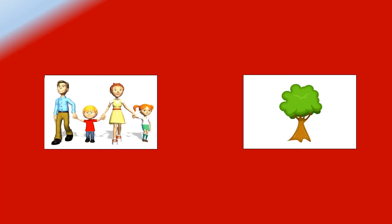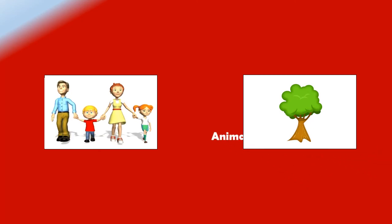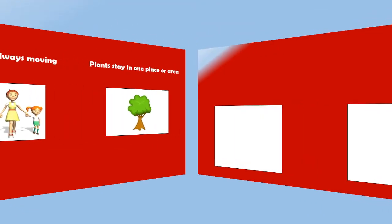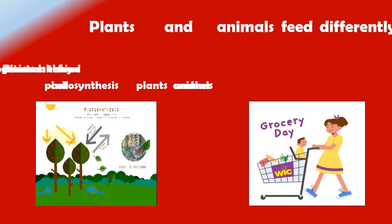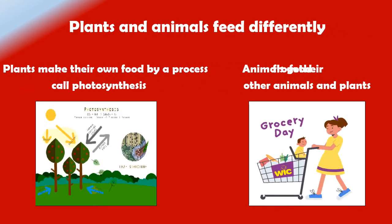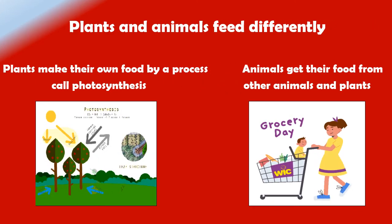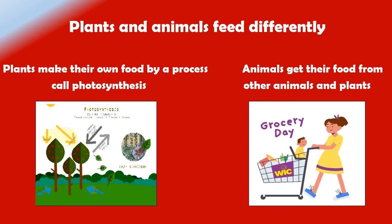Plants remain in one place or area, while animals are able to move around. Plants make their own food by a process called photosynthesis.